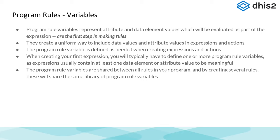What are program variables? Essentially, program variables represent attributes and data element values, which can be evaluated as part of an expression. These are the data elements and attributes that you actually define — usually data elements, sometimes attributes. Once you make them as a variable, you can use them in multiple program rules. They can include data values and attributes and operate these as expressions.